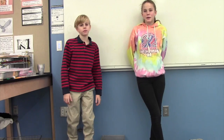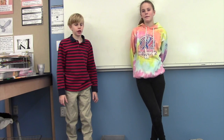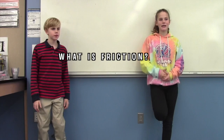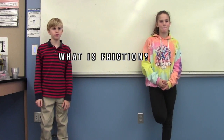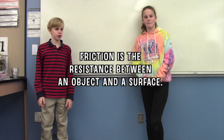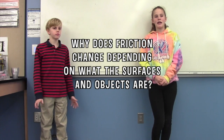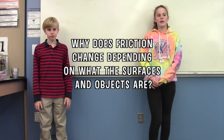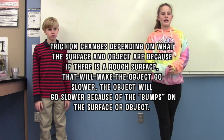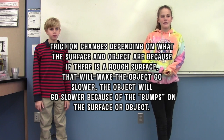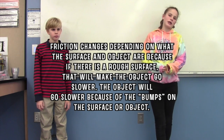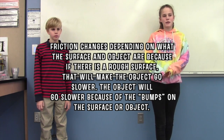Before we wrap this video up, let's go over some key vocabulary and definitions. When we ask a question, you are welcome to stop the video and try to answer it on your own. What is friction? Friction is the resistance between an object and a surface. Why does friction change depending on what the surfaces and objects are? Friction changes depending on what the surfaces and objects are because if there is a rough surface, that will make the object go slower. The object will go slower because there are bumps on the surface or the object.